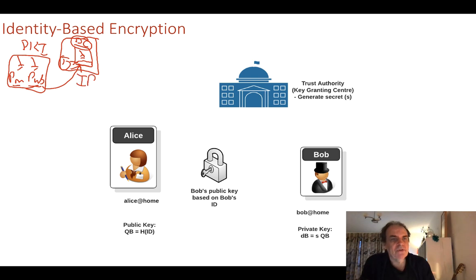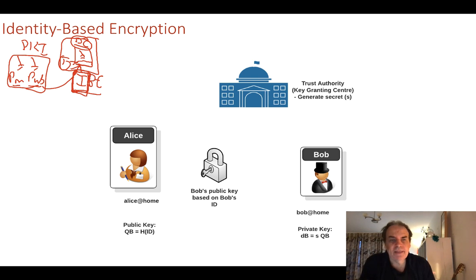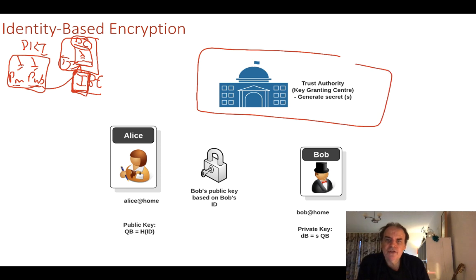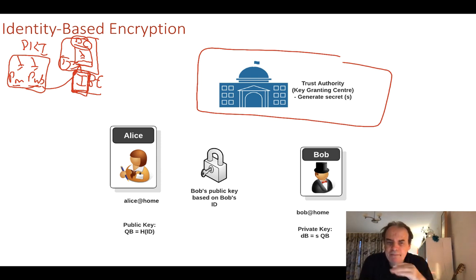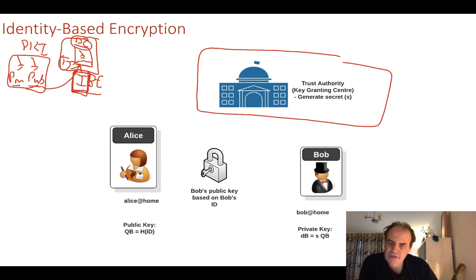One proposed method is identity-based encryption. With IBE we generate the public key based on some attribute or attributes of the identity of the entity we're dealing with, through a trust authority or key granting authority. The advantage of using a trust authority is that it can manage the circle of trust and the keys responsible for the whole infrastructure, and can keep a key in escrow if required.